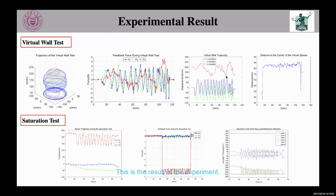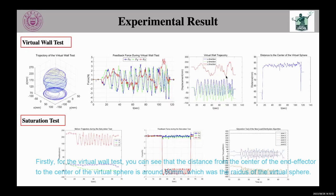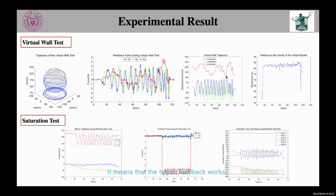This is the result of the experiment. Firstly, for the virtual wall test, you can see that the distance from the center of the end effector to the center of the virtual sphere is around 80 mm, which was the radius of the virtual sphere. It means that the haptic feedback works.